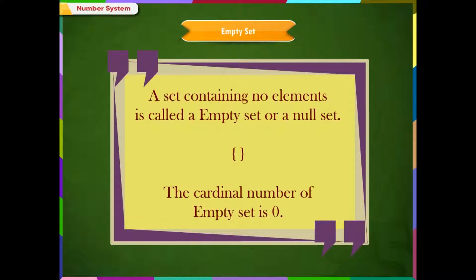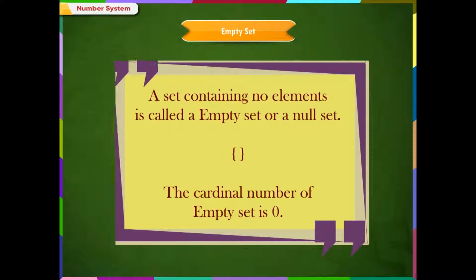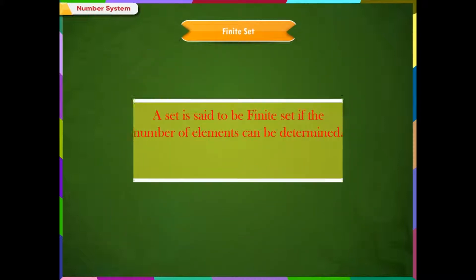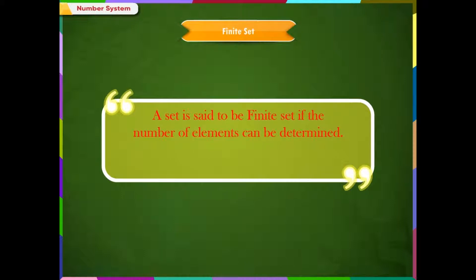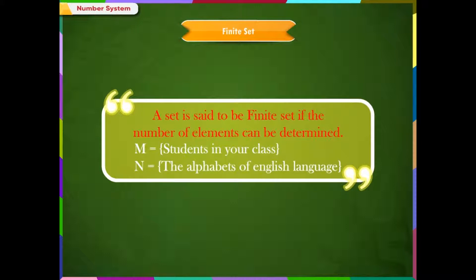Empty set: a set containing no elements is called an empty set or a null set. The symbol of an empty set is an empty curly bracket. The cardinal number of an empty set is zero. Finite set: a set is said to be a finite set if the number of elements can be determined. Some finite sets are M is equal to students in your class, and N is equal to the alphabets of the English language.